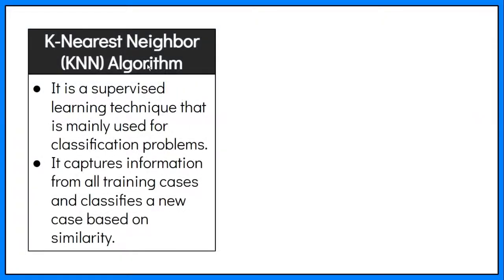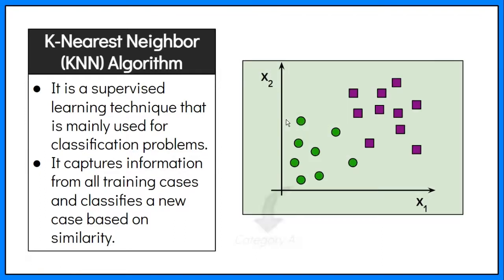K-nearest neighbor, or KNN algorithm, is a supervised learning technique that is mainly used for classification problems. It captures information from all training cases and classifies a new case based on similarity or how their neighbors are classified.